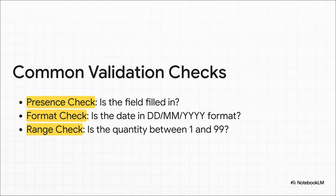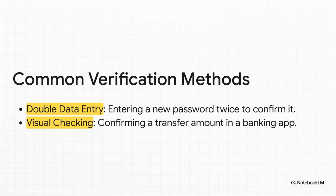The computer zips through validation checks in an instant: did you leave a required field blank? Is the date in the right DD/MM/YYYY format? Did you accidentally try to order a thousand of something when the limit is 99? It's all automated. And verification? That's all about catching our human mistakes — it's the system's way of tapping us on the shoulder and saying, 'Hey, are you sure this is what you meant to type?' before it goes ahead and processes everything.